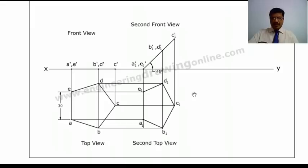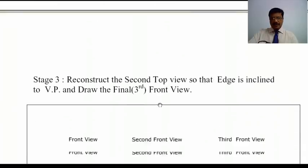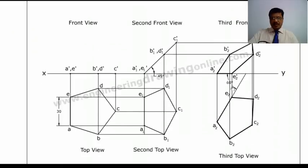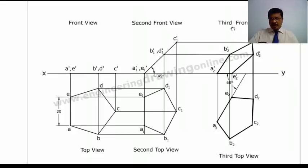Now in the third stage, we have to represent the edge inclination. To represent the edge inclination, I have to reconstruct the second top view. At an angle of 60 degrees, I have reconstructed this second top view — this is the final top view, that is the third top view. From this top view, I am drawing the projectors. From the second front view, I draw the locus lines, and automatically the final front view is obtained. This is the final front view. This is the first case.